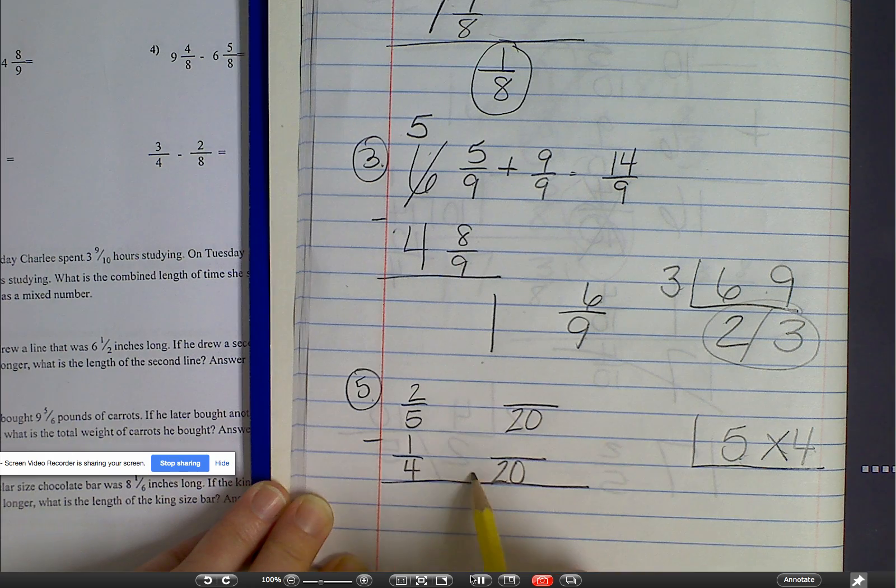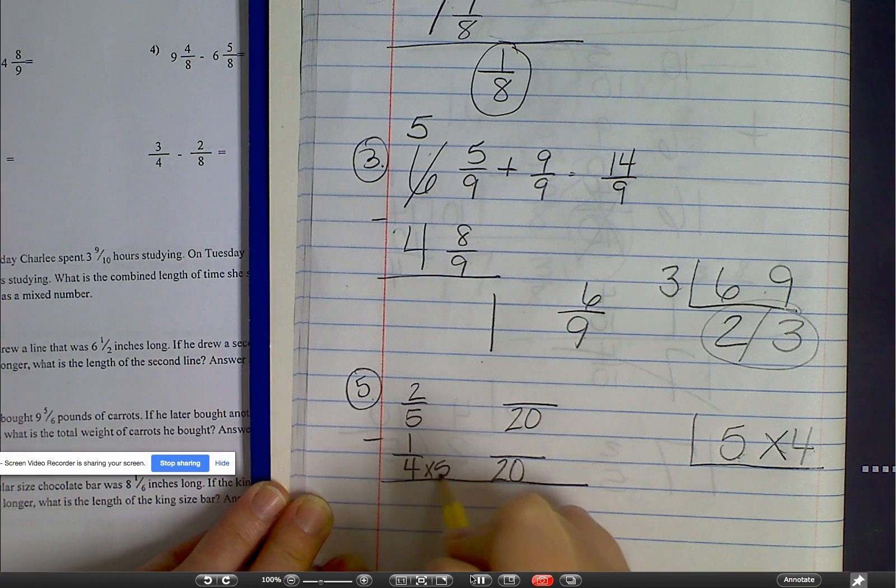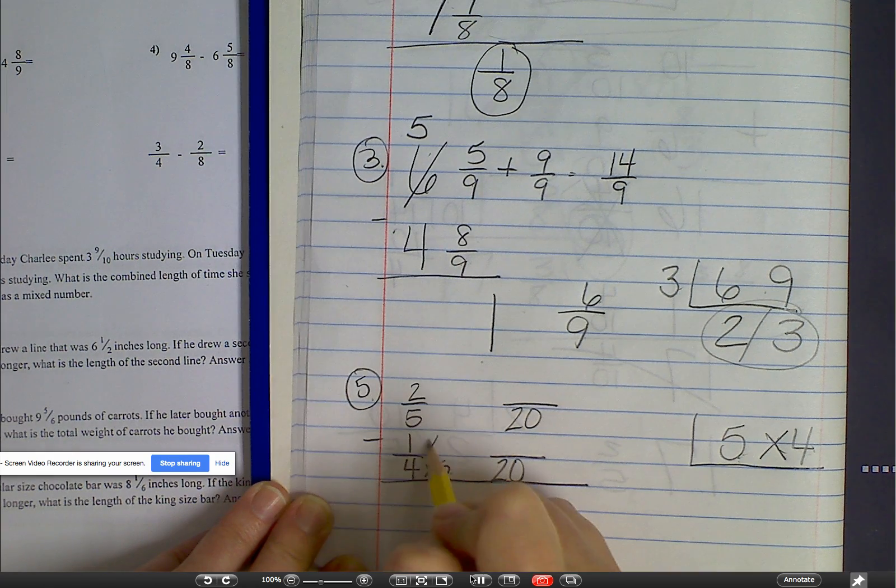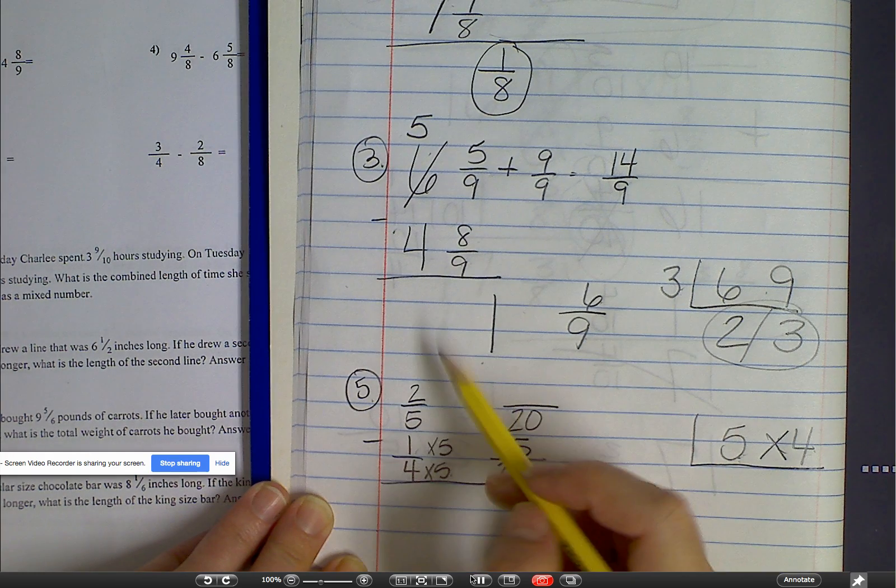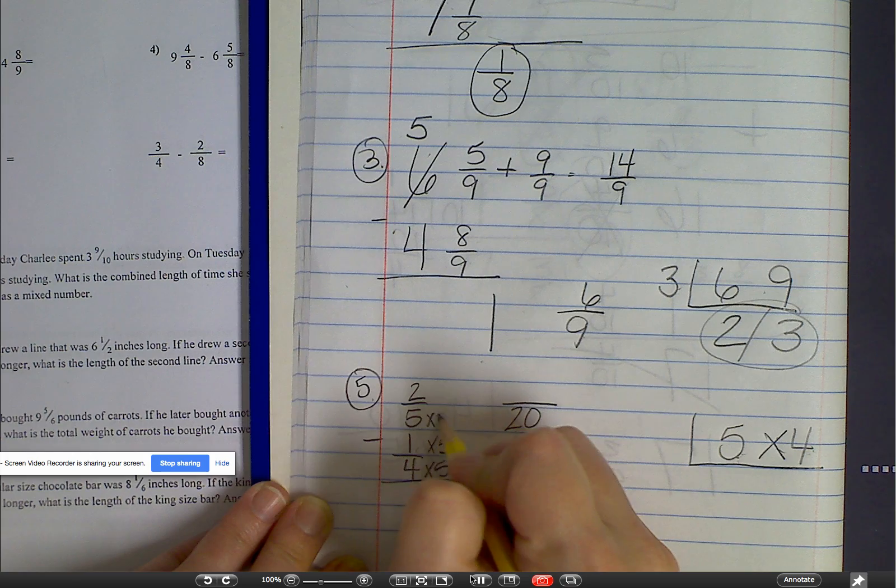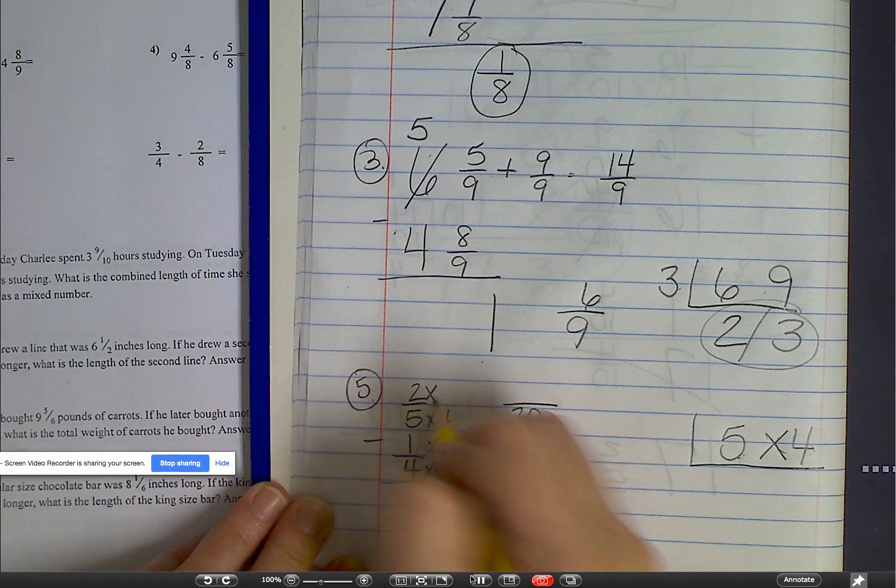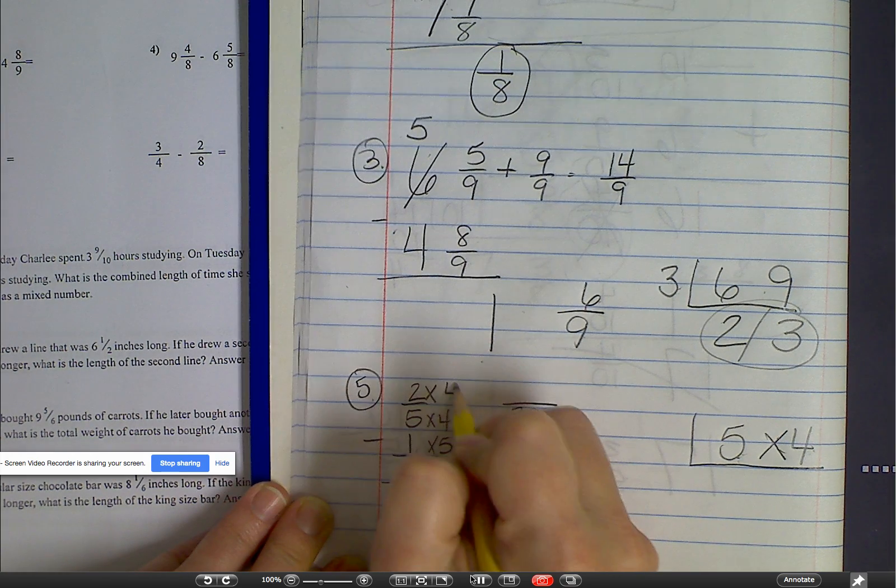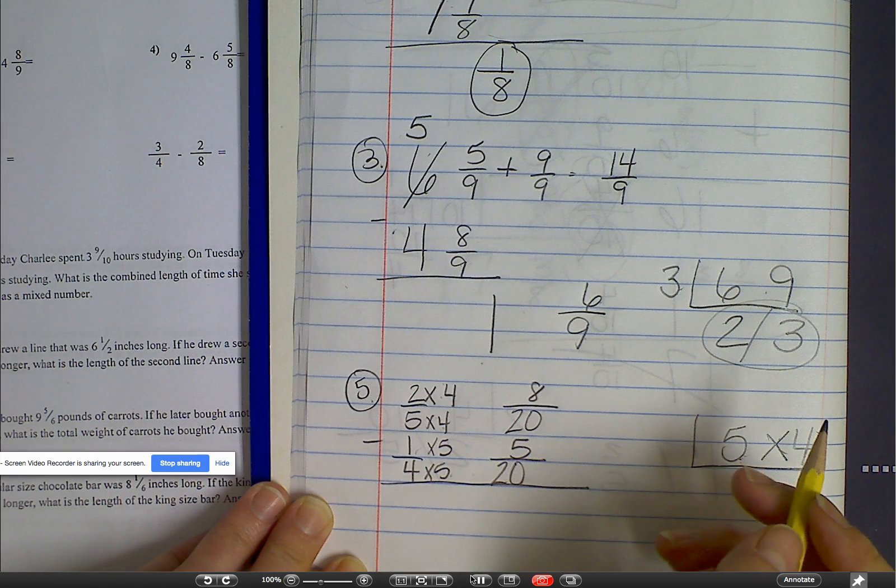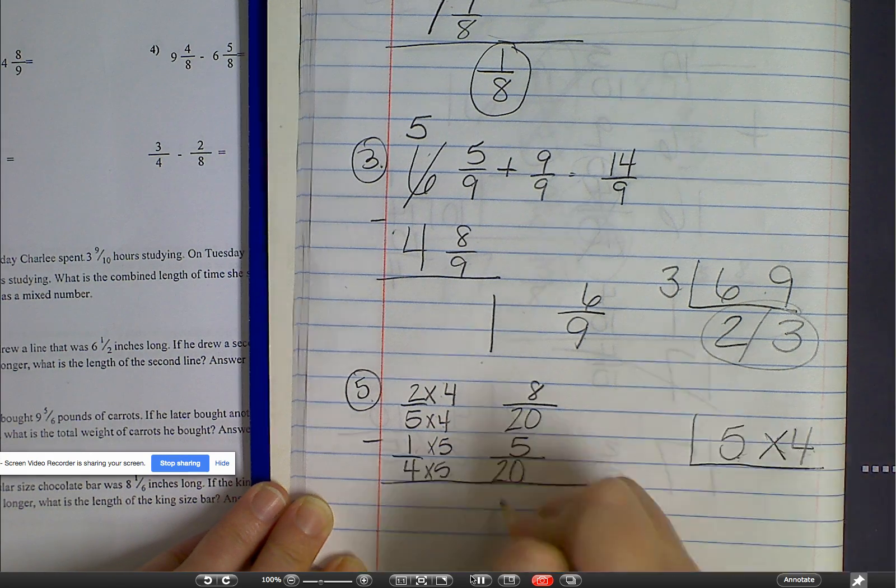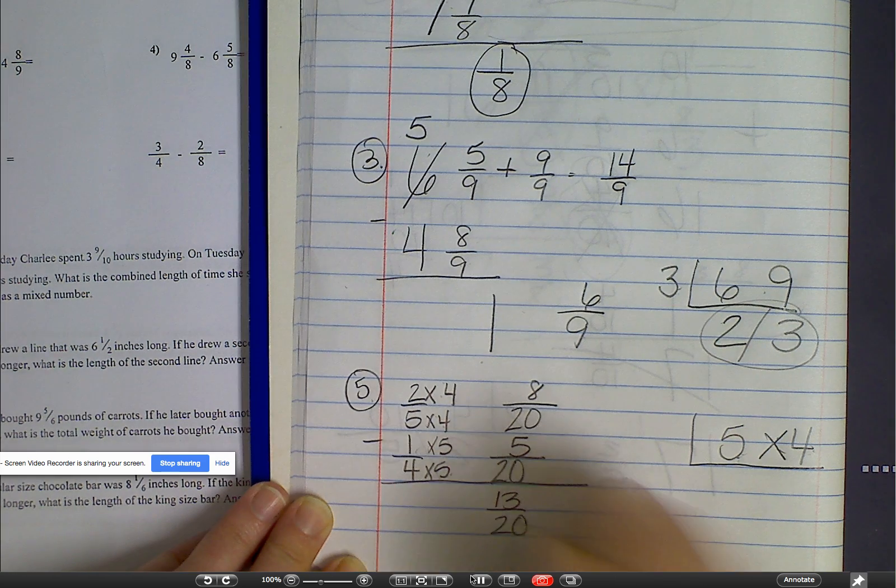So then I say, how did I get from four to 20? And I know that was times five. Whatever I do to the bottom, I have to do to the top. So one times five is five. And then I have five times four is 20. And whatever I do to the bottom, I have to do to the top. Two times four is eight. Eight minus five is three. Thirteen-twentieths. Final answer.